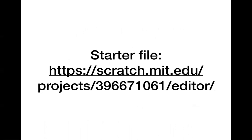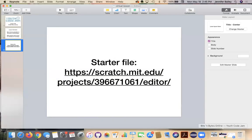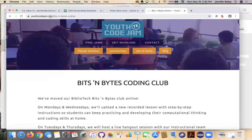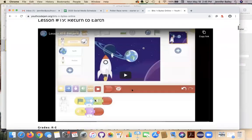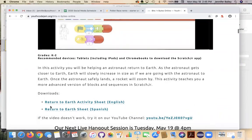Today, if you want to pull it up, we're going to go to this link. Because I have to record these before the website's updated, it's not there right now, so you can type in this URL: scratch.mit.edu/projects/396671061/editor. Or just wait and we'll get there together, or click the link from our website youthcodejam.org under the Jam at Home tab, then go to Bits and Bytes Online and scroll down to find the link.